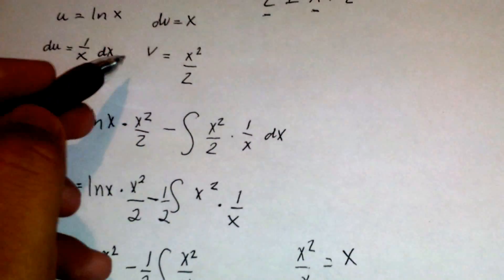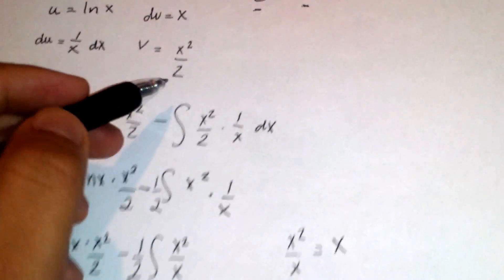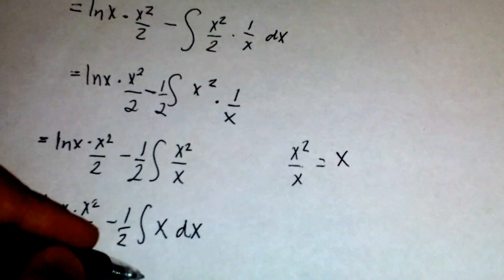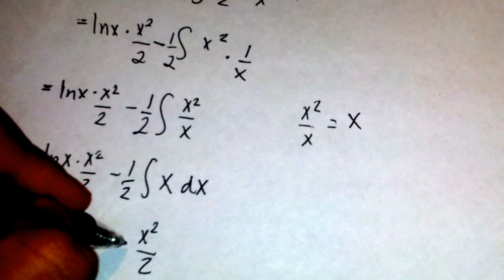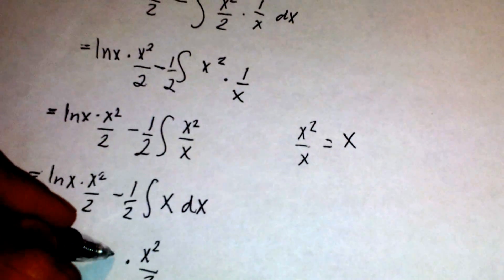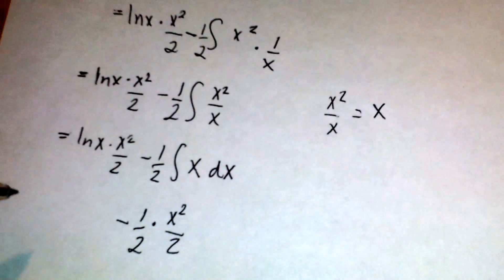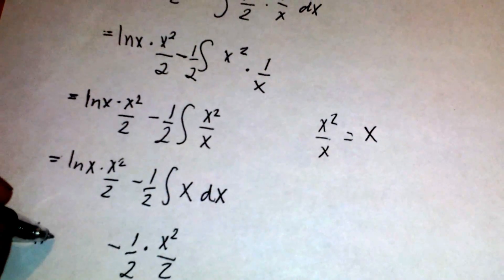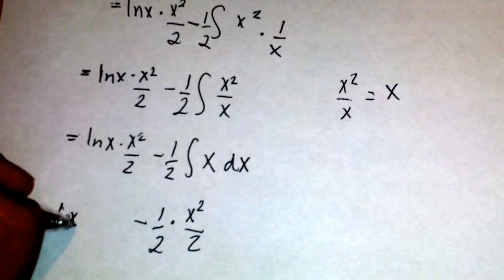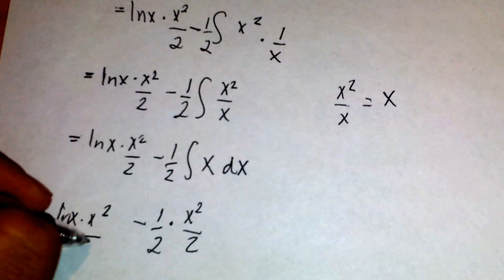Up here we took the integral of x, which is x squared over 2, so we can use that here again. This is being multiplied by 1 half. And the left side is ln x times x squared over 2.